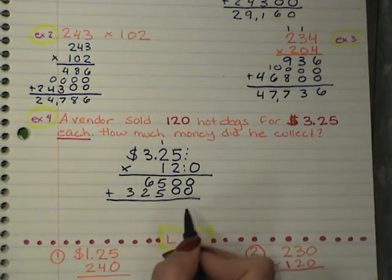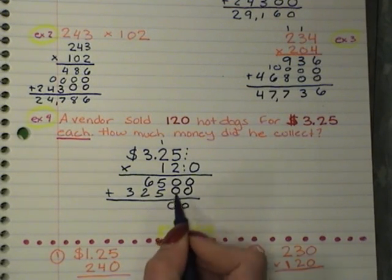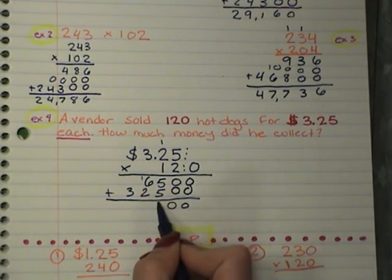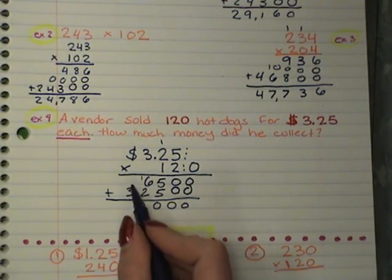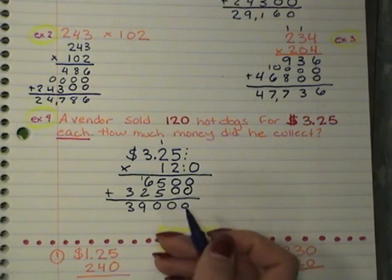Okay, when we add this, 0 plus 0, 0, 0 plus 0, 0, 5 plus 5, 10, 6, 7, 8, 9, and 3 plus 1, 3 plus nothing, sorry, 3.